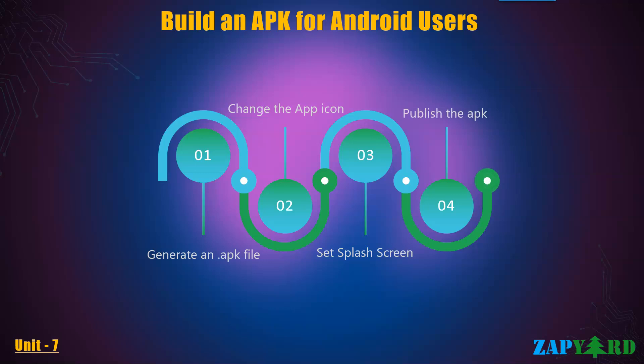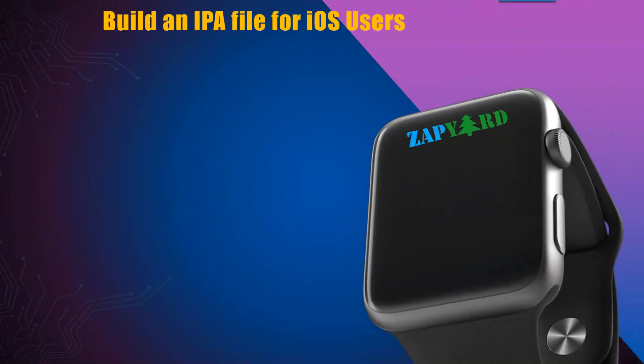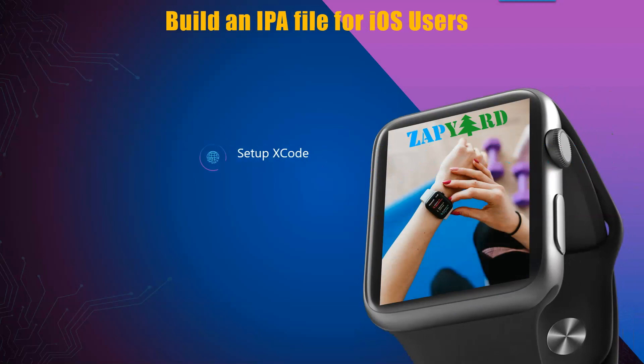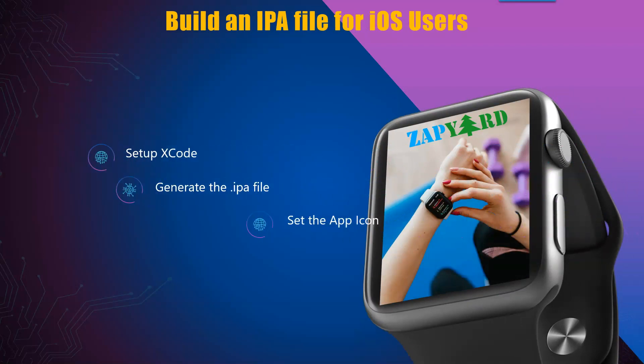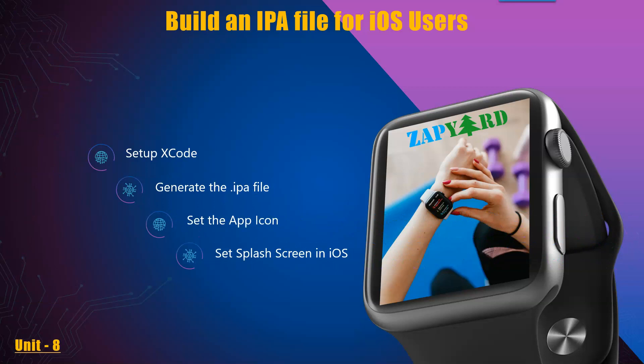We will change the app icon, set a splash screen and publish the APK. You will surely love this class. Once we have made our app Android ready, why should the Apple or iOS devices be left behind? The next unit of the training will cover how to build the IPA file for iOS users.